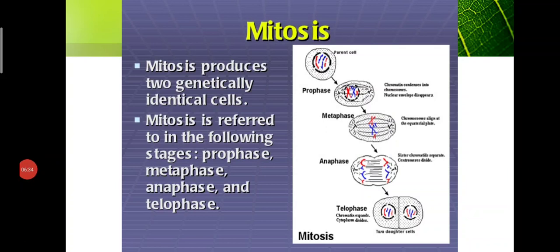Before starting the prophase, we have the interphase. The interphase is actually the resting phase of the nucleus, which means the cell is getting ready for cell division. Under karyokinesis, all four remaining phases occur: prophase, metaphase, anaphase, and telophase.